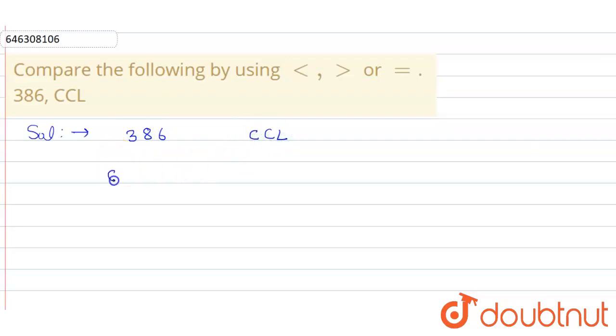So you know that C, we represent as 100. And L, we represent as 50. So if I write CCL value, that is, it will come to be.